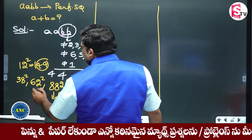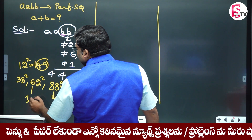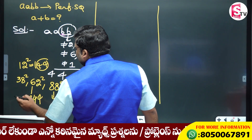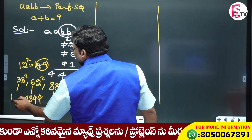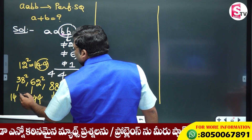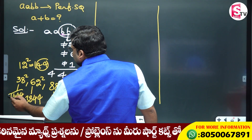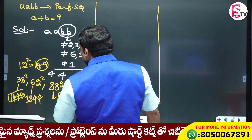62 square — my answer is 3844. And the answer is 1444.